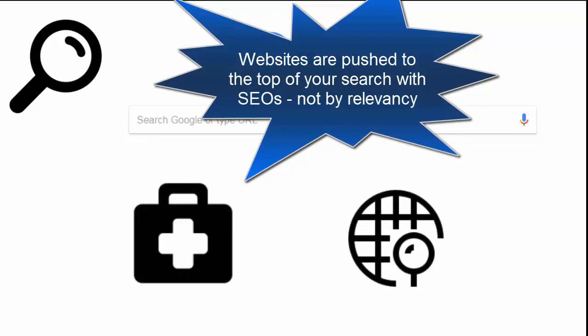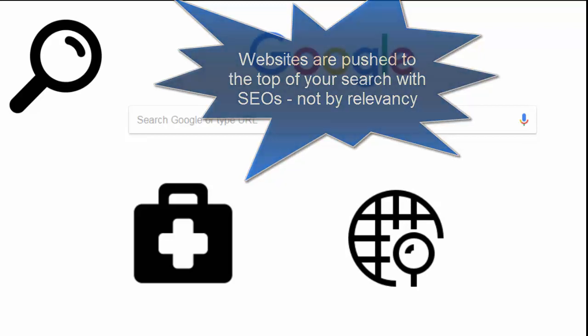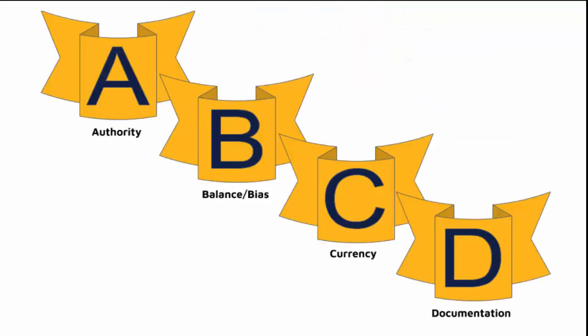So what can you do to find reliable health information online? The A, B, C, D test can help evaluate websites, standing for Authority, Balance and Bias, Currency, and Documentation.